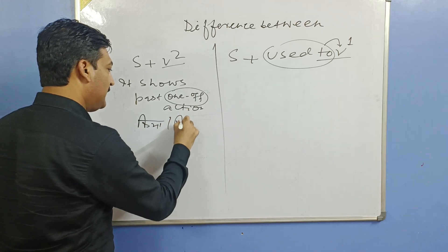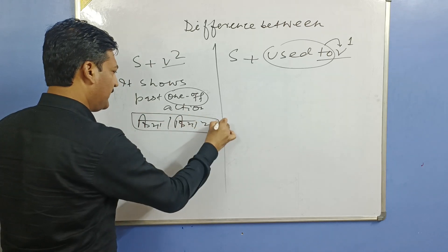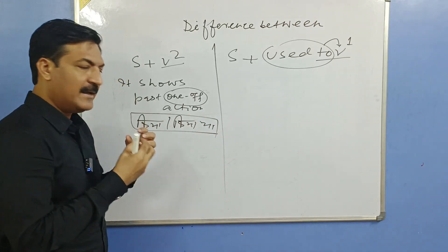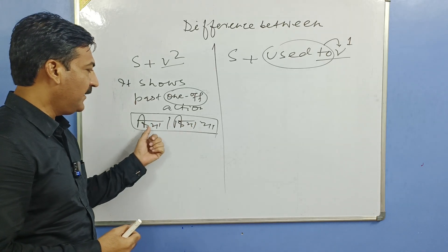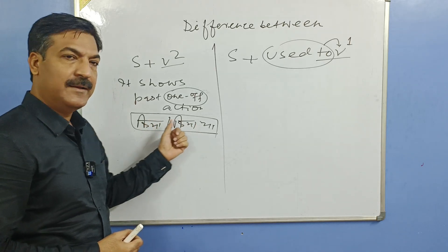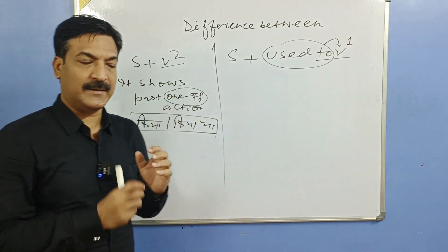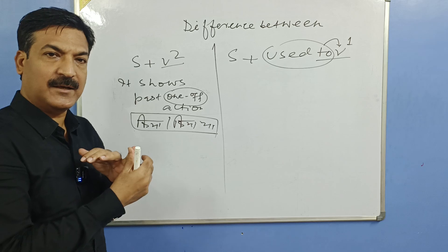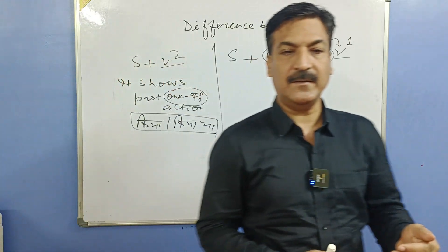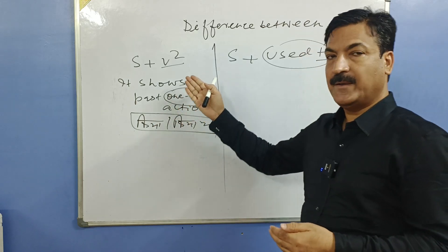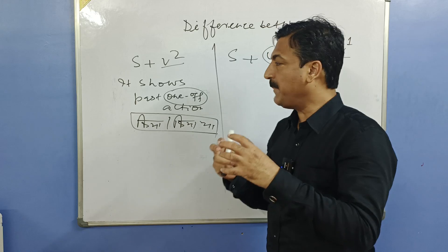The Hindi pattern to identify V2 usage is: 'kiya' ya 'kiya tha'. For example: aaya ya aaya tha, gaya ya gaya tha, dekha ya dekha tha, suna ya suna tha, padha ya padha tha. Toh jab kabhi bhi 'kiya' ya 'kiya tha' ho, toh aap V2 use karein. Jaise: wahan gaya tha — I went there; tum aaye — you came.